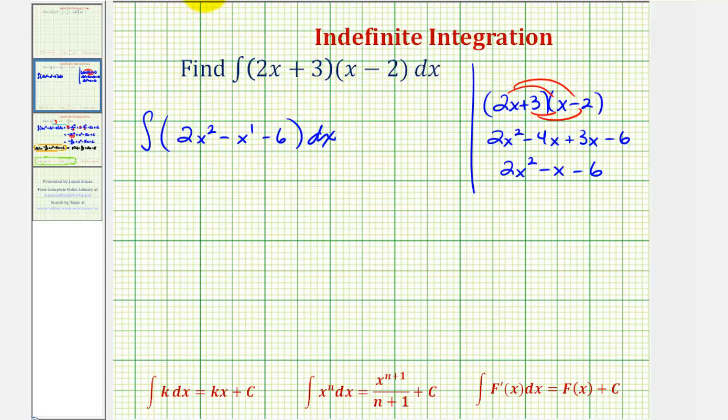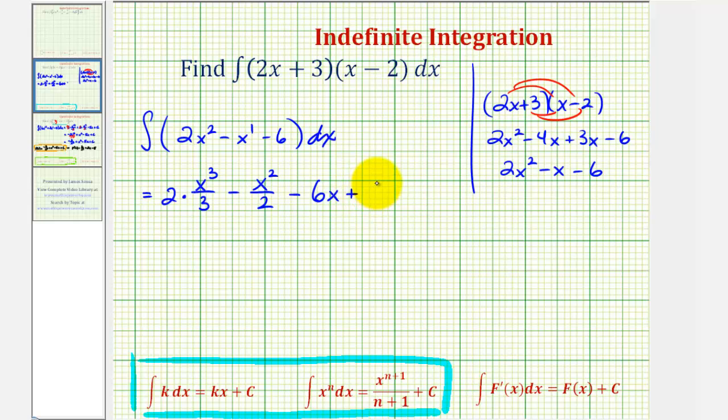So now to find the antiderivative, we'll apply these two integration formulas. So applying the power rule of integration, if we have two x to the second, the antiderivative would be two times x to the third divided by three minus the antiderivative of x to the first would be x to the second divided by two minus the antiderivative of six would just be six times x, or six x. And we have plus a constant of integration.